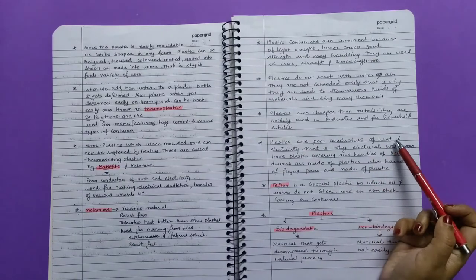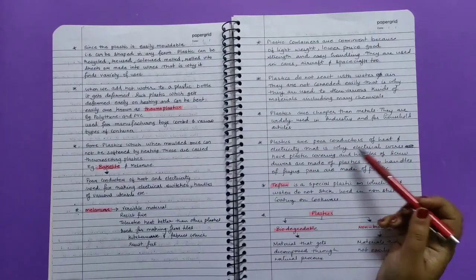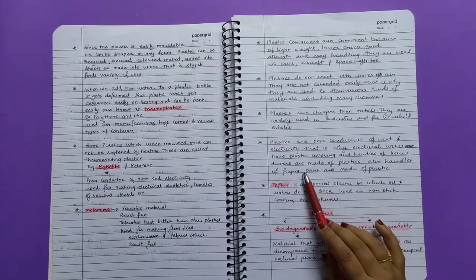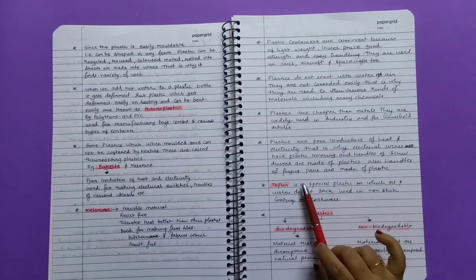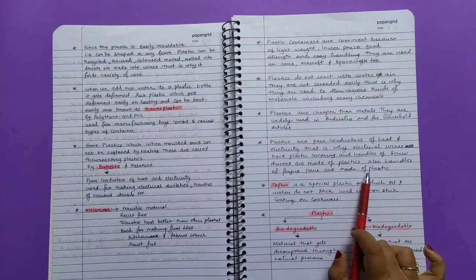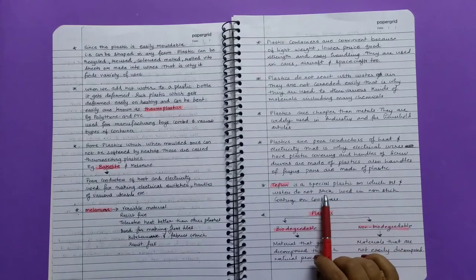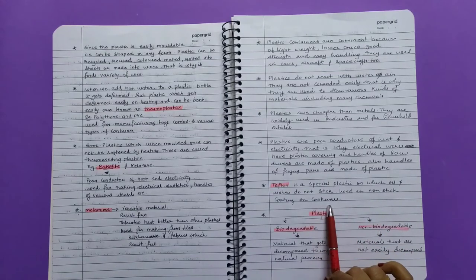Plastics are poor conductors of heat and electricity. That is why electrical wires have plastic covering and handles of screwdrivers are made of plastic. Also, handles of frying pans are made of plastic. Teflon is a special plastic on which oil and water do not stick. It is used in non-stick cookware.